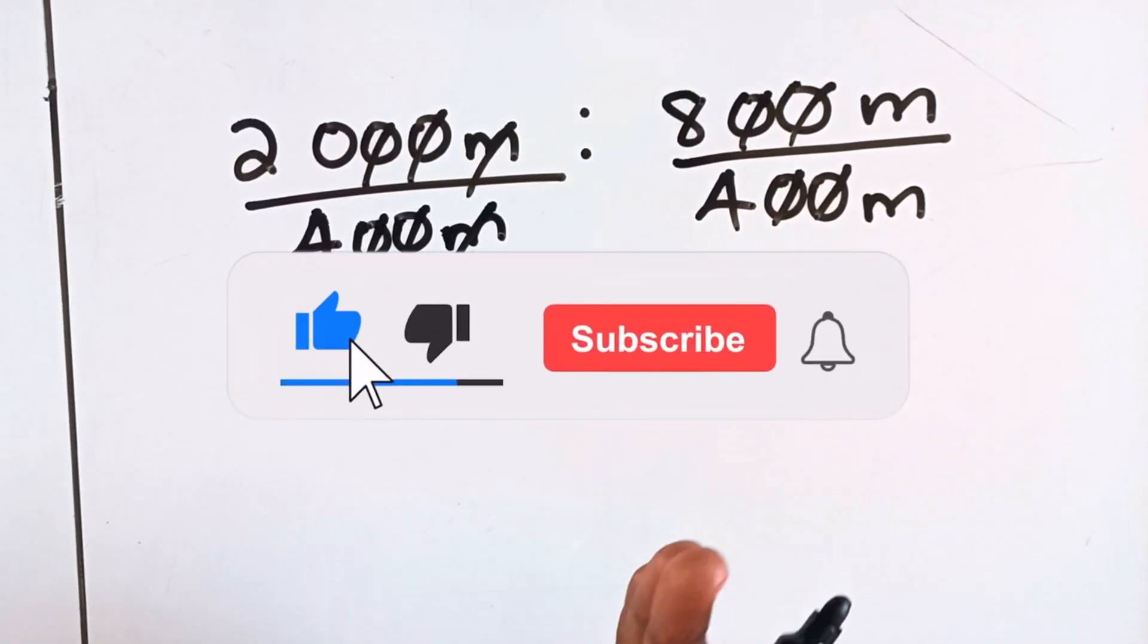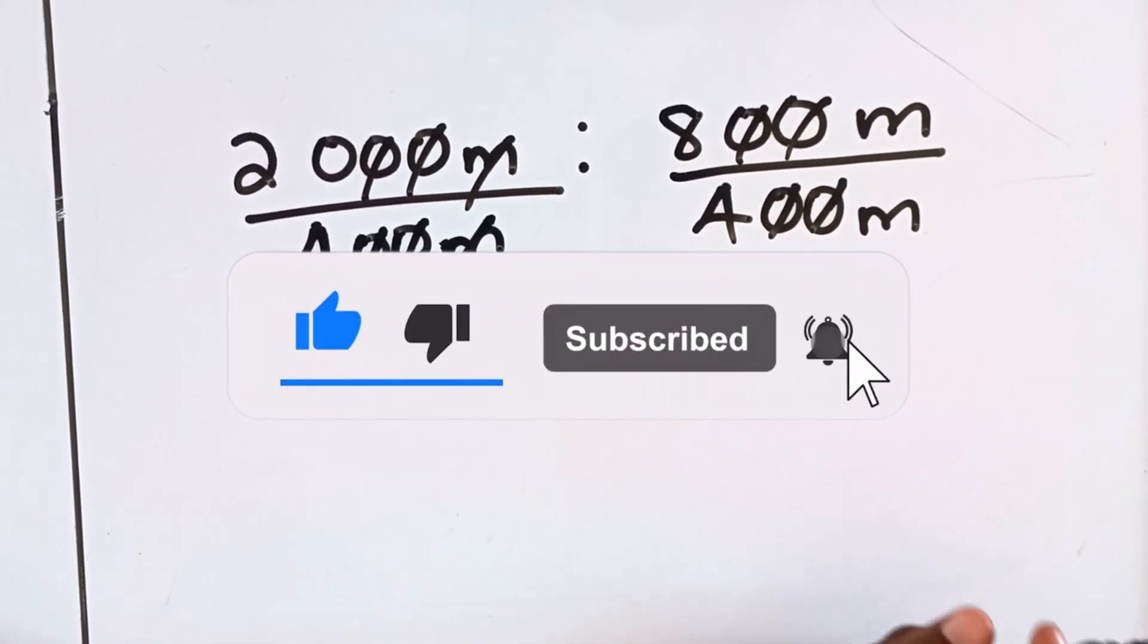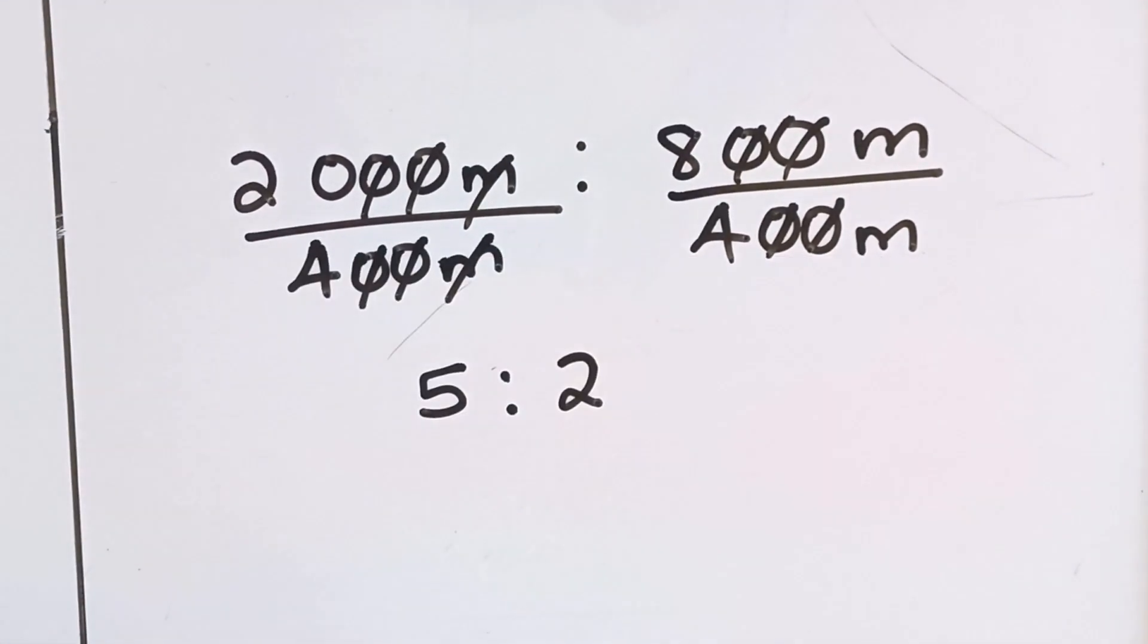This is how you simplify ratios with different units. Make sure that the units are the same first, then find their highest common factor. This is the end of our lesson, thank you for watching.